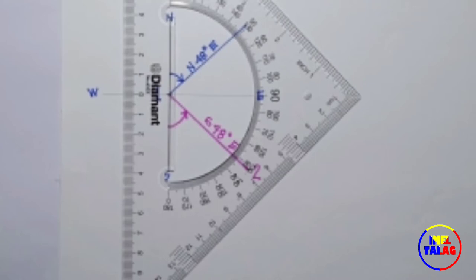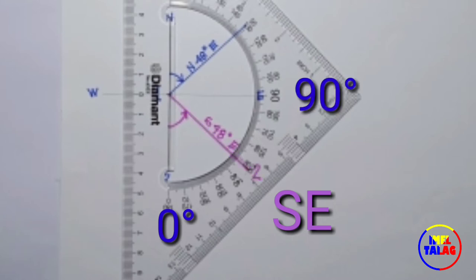If the line direction is going southeast, the zero degrees is placed on the south and 90 degrees is placed on the west.